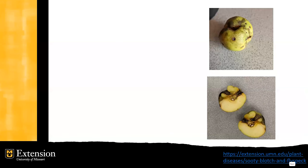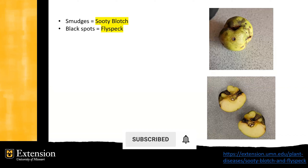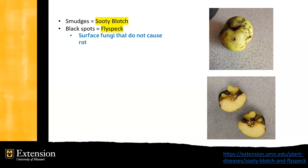If we take a look at that apple, the smudges are something called sooty blotch. And the other thing causing the little black pinpricks is called flyspeck. Both of those are very common and are often called just autumn diseases — they're very common in our fruits. Both of these are types of surface fungi that do not cause any kind of rot or anything with the apple.